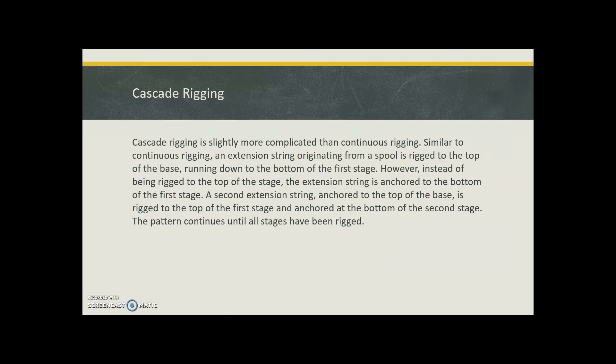Cascade rigging. Cascade rigging is more complicated, but it's similar in that the extension string originates from the spool and is rigged to the top of the base and running down to the bottom of the first stage. But instead of being rigged to the top, the extension string is anchored to the bottom of the first stage.